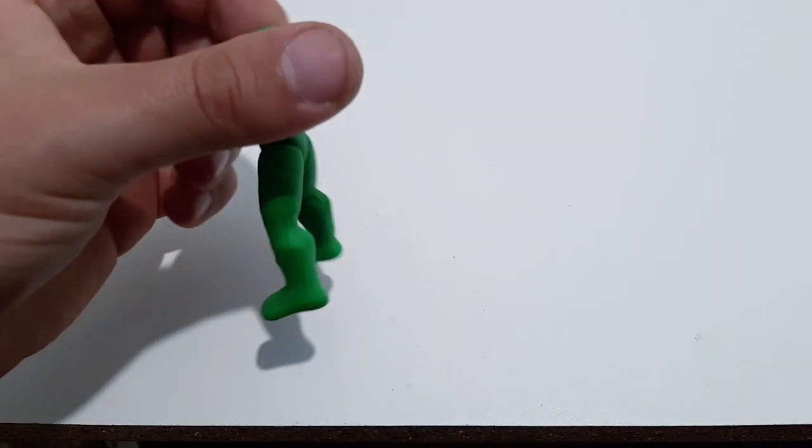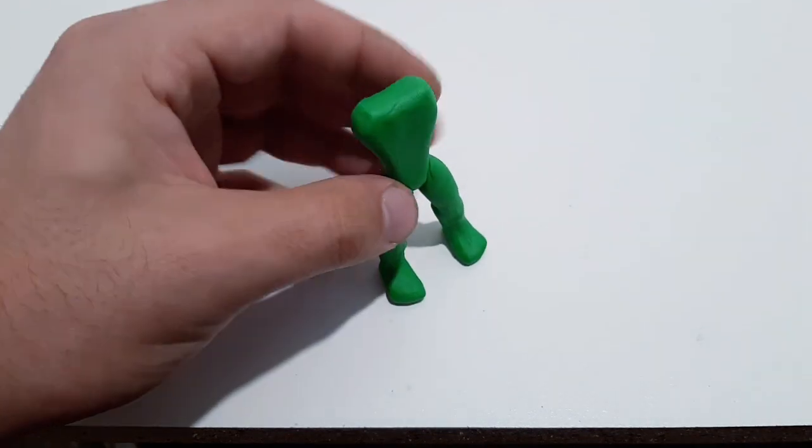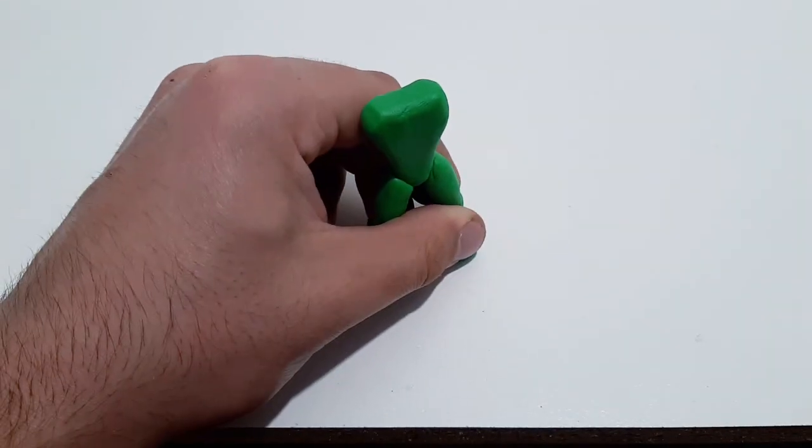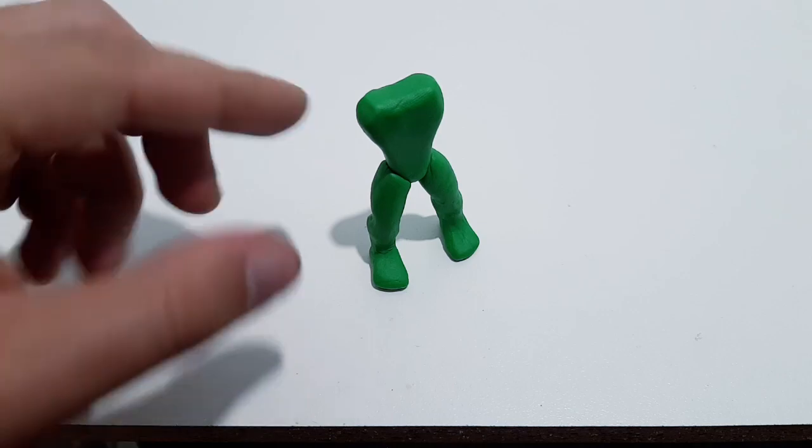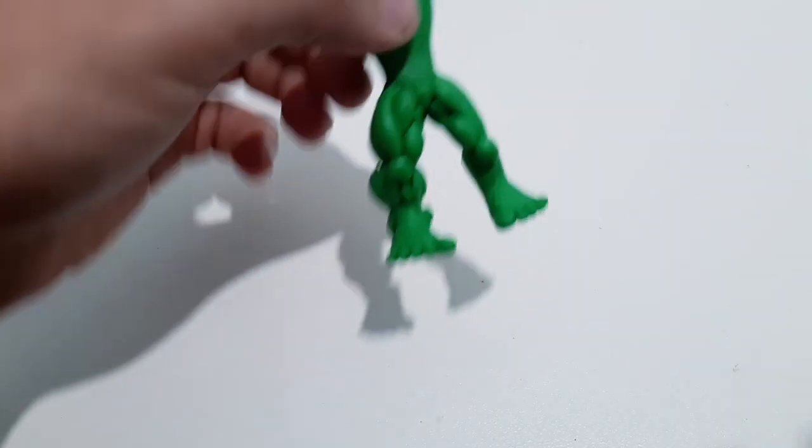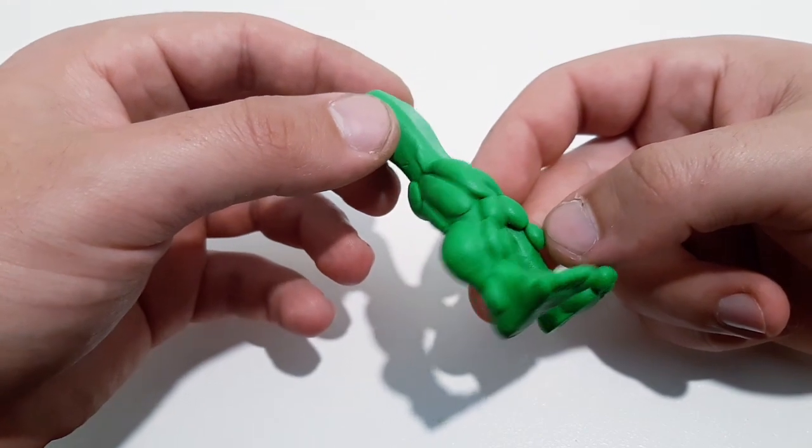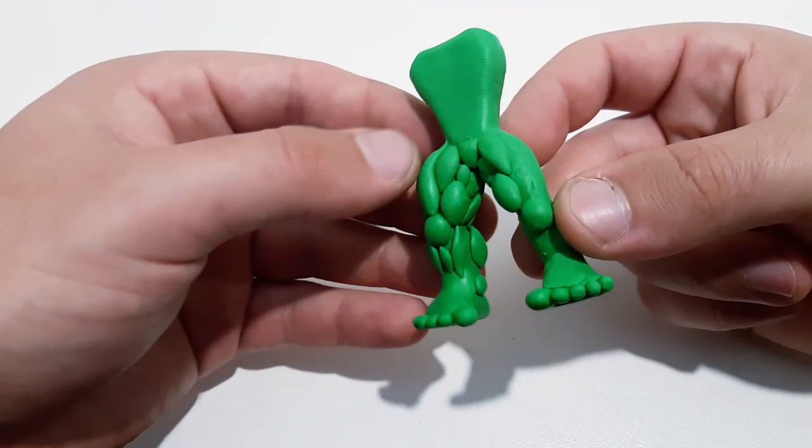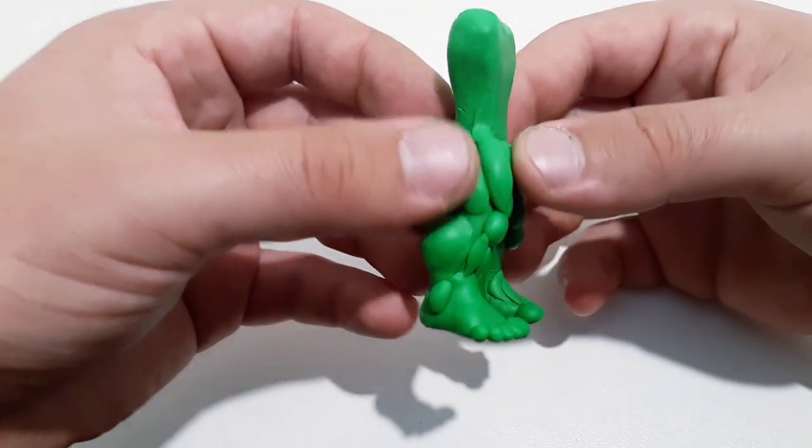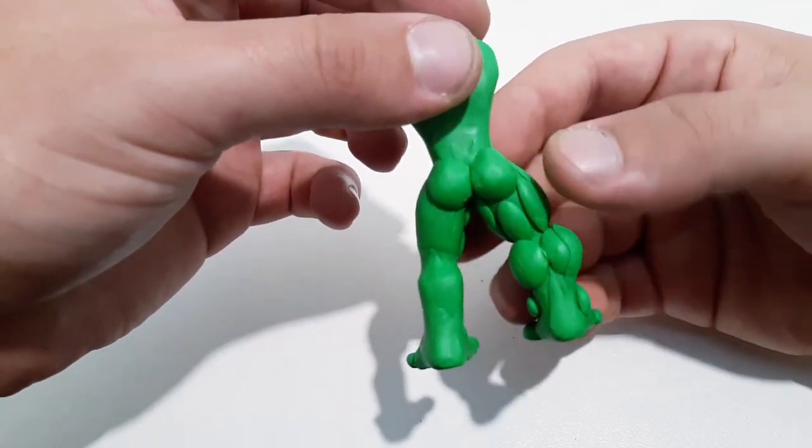Once you are done with the leg and you have already attached it, it will look kind of skinny, but don't worry. Here I have already started adding the bulges of clay as the muscles, and you can already see that this guy's right leg does not look skinny at all.